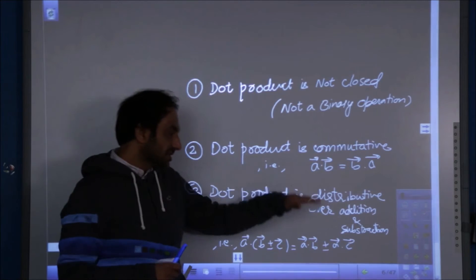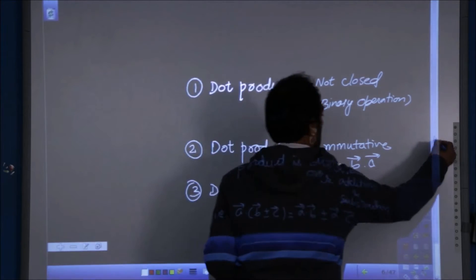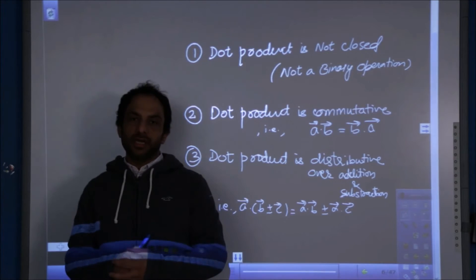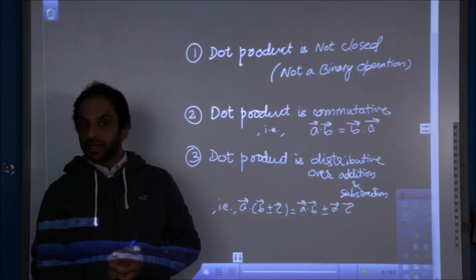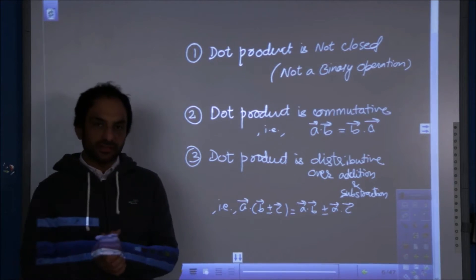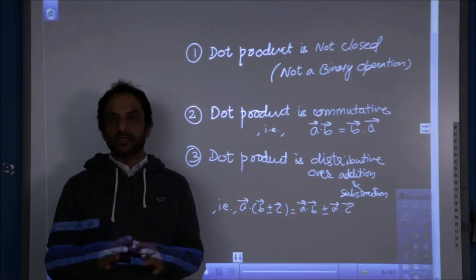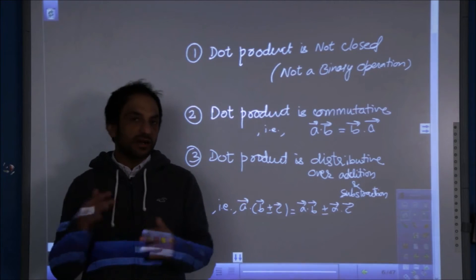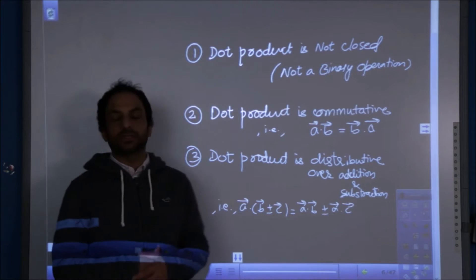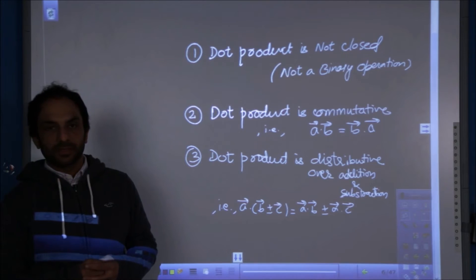Third, the dot product is distributive over addition and subtraction. That is, A dot (B ± C) = A dot B ± A dot C. You can take the dot product of one vector with the sum or difference of two others, or take each dot product individually and then add or subtract.